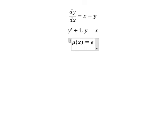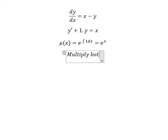Mu of x equals e to the power of the integral of number one. Number one, that's it from here dx, and you get e to the power of x. So we multiply both sides with e to the power of x.